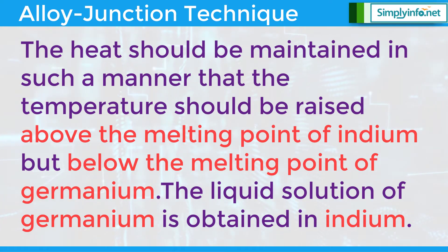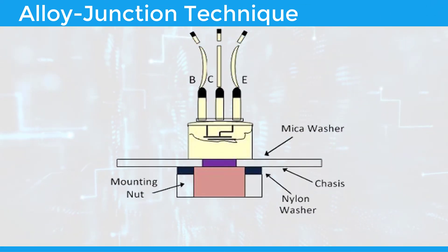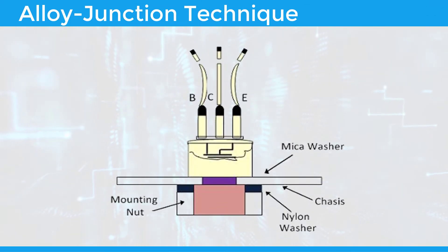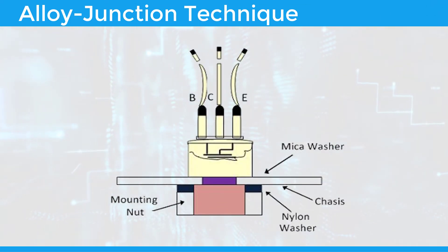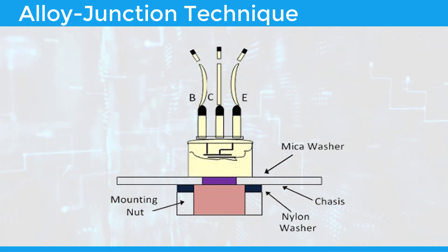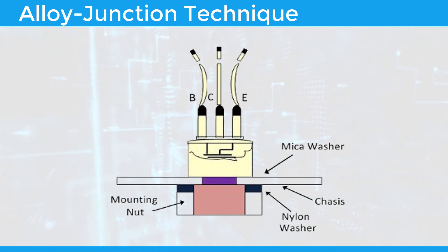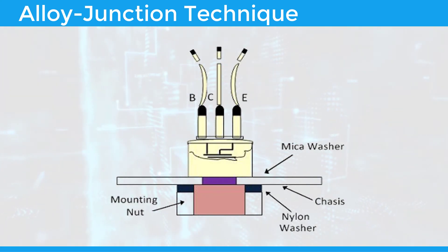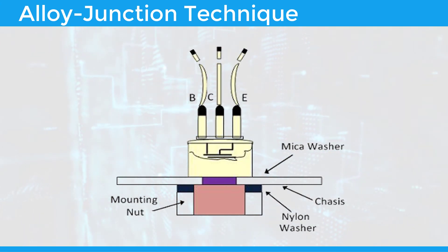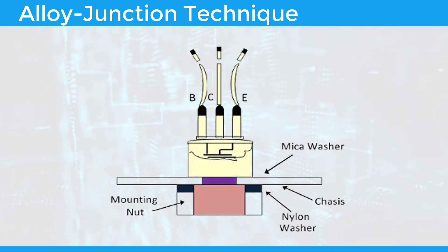A liquid solution of germanium is obtained in indium, and the whole structure is cooled down steadily. After cooling, the region of P-type germanium is produced and the alloy of indium and germanium is deposited on the layer. The leads of the emitter and collector are deposited on the two sides of the wafer as shown. Thus, the PNP transistor is fabricated.